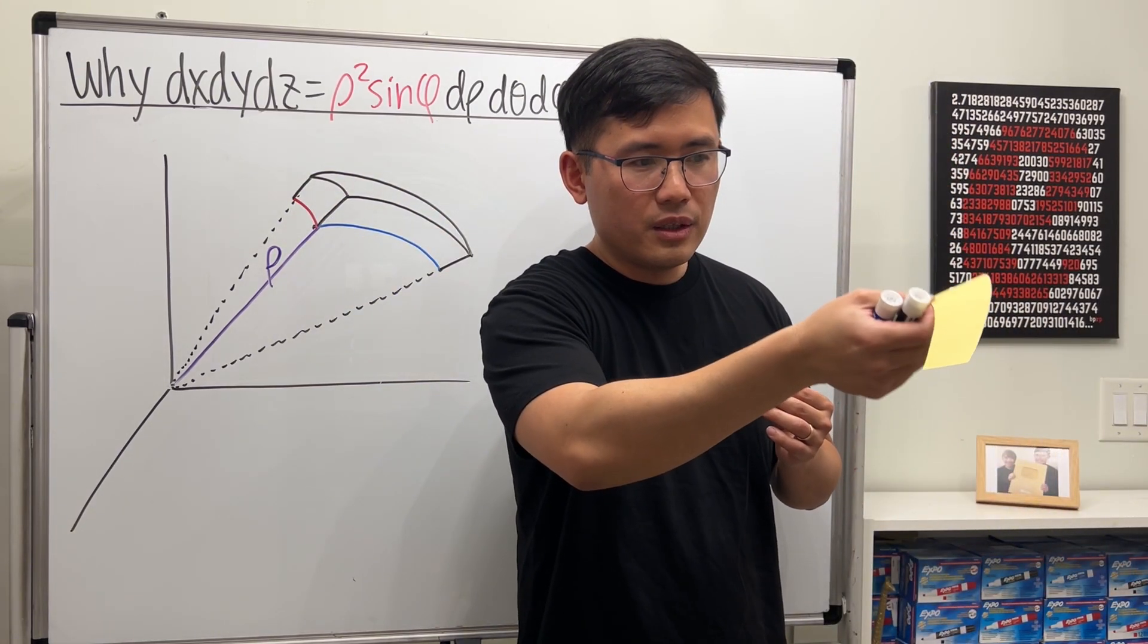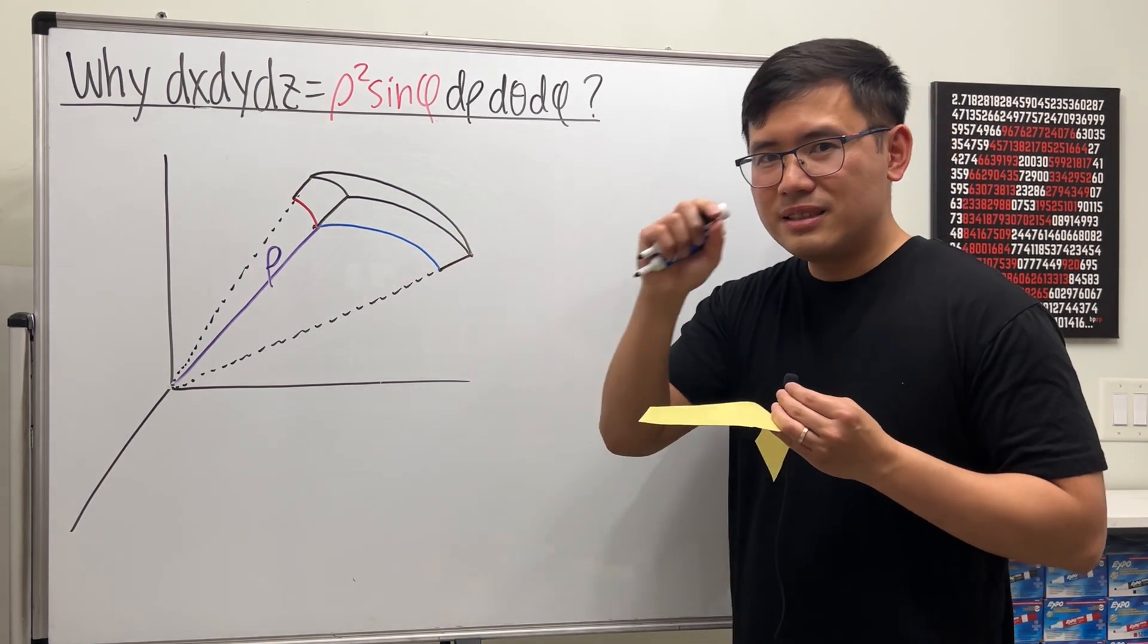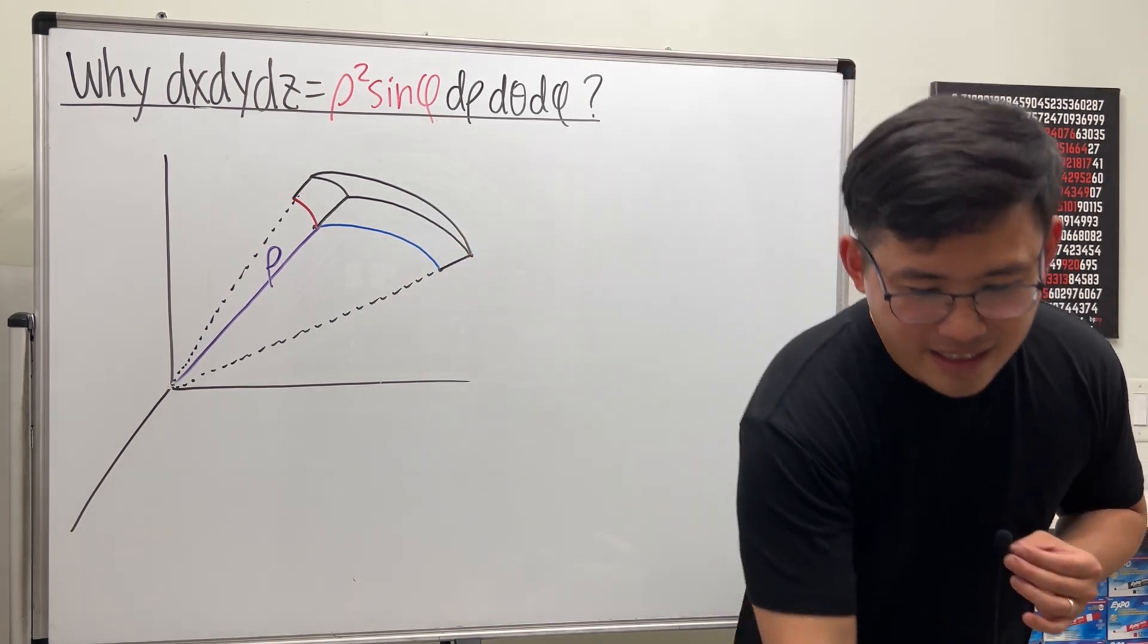It's meant to be just a tiny bit. Now we just have to find the volume of this shape.